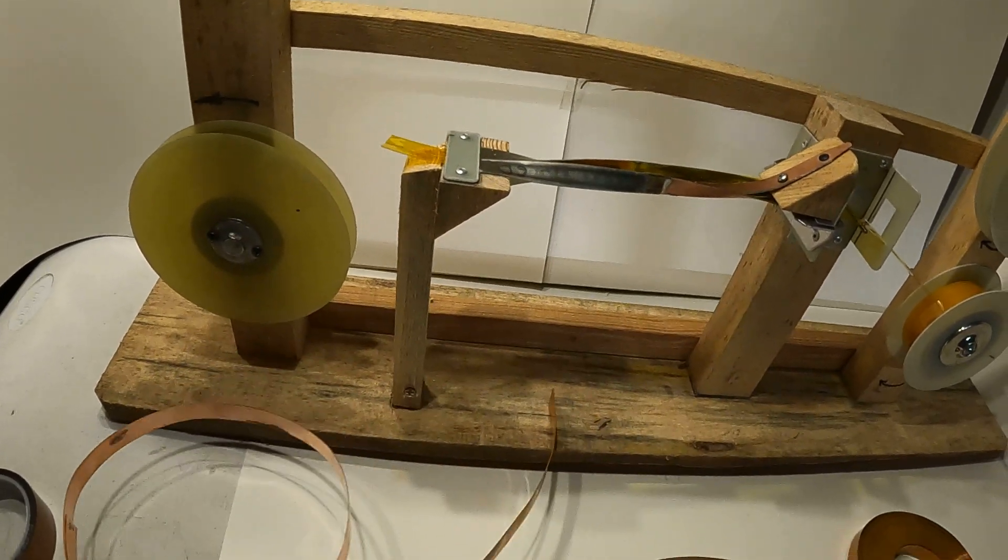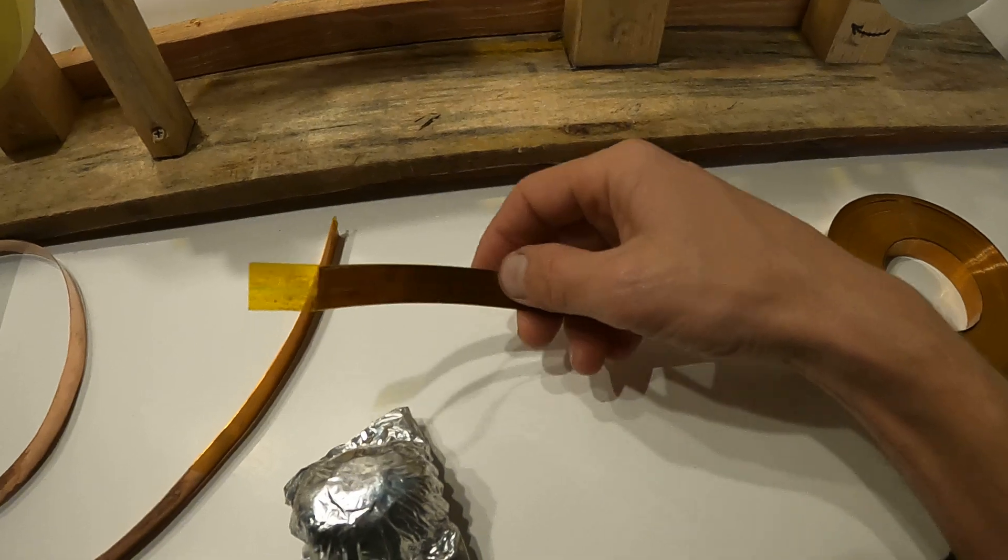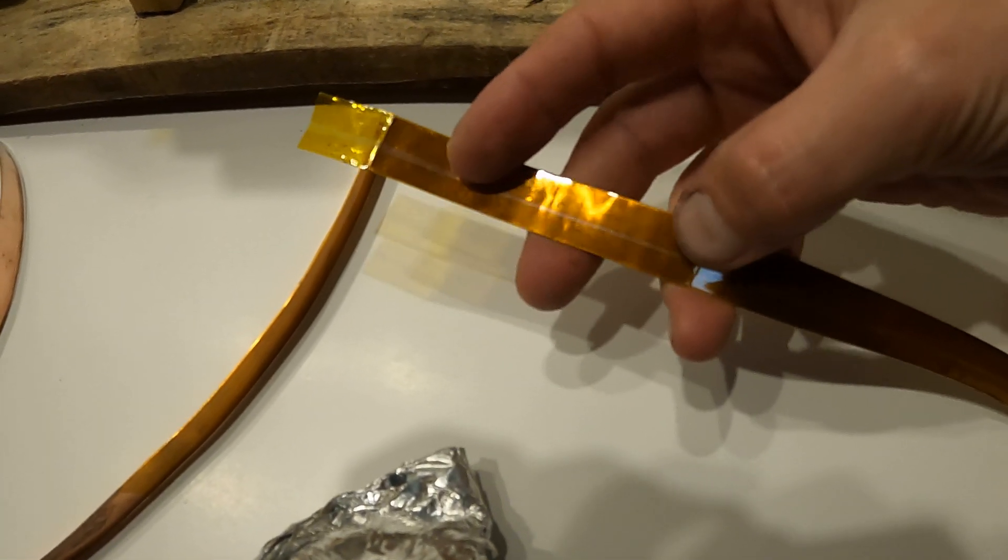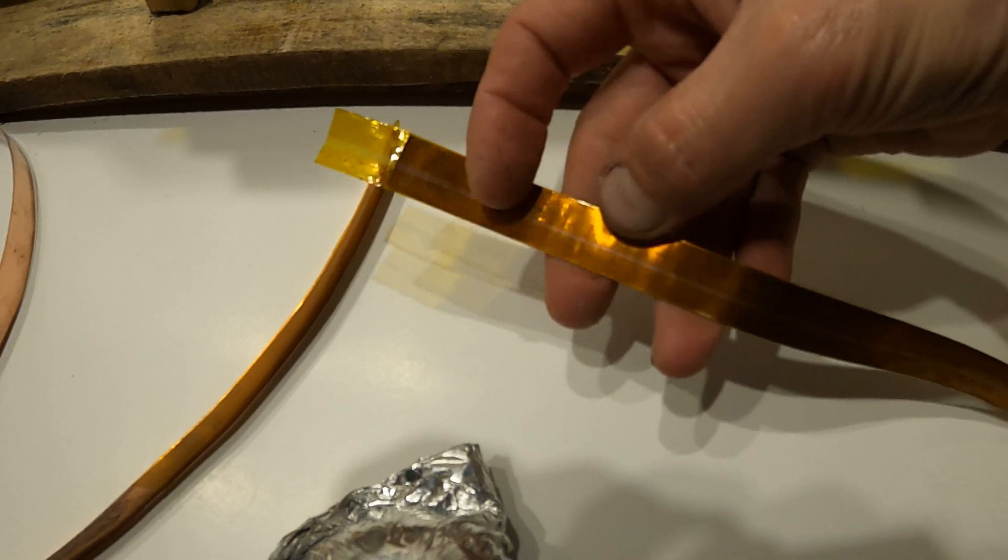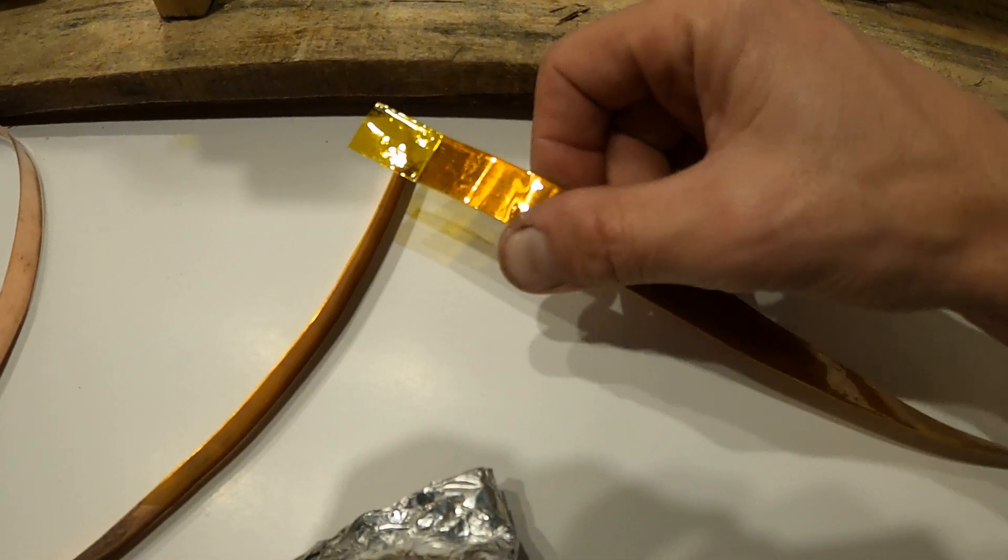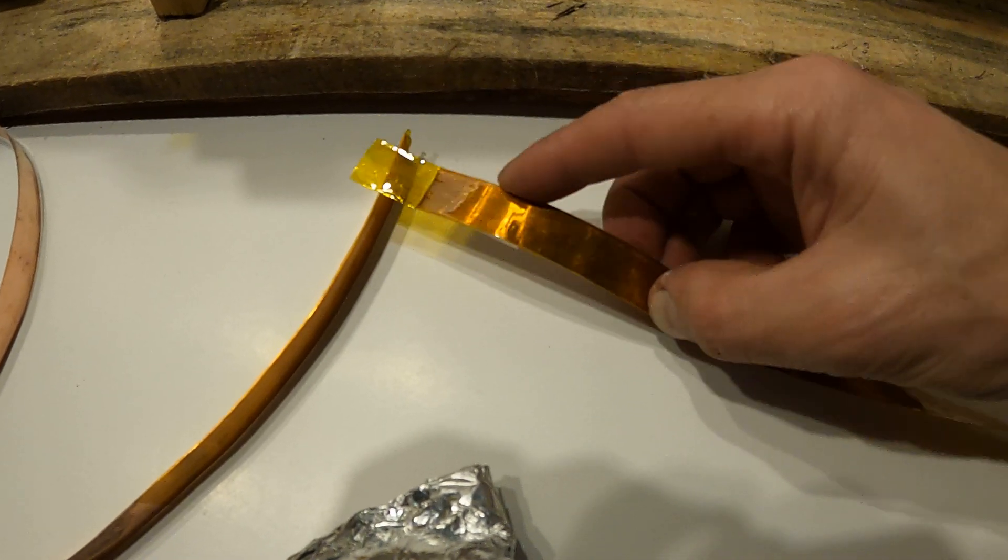After it runs through the machine, one side has one tiny strip that is exposed and the other side is perfectly closed up.